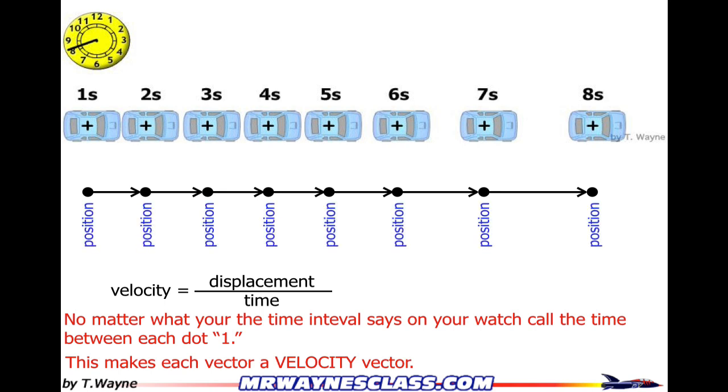First, it contains the position of the car at every interval of time and every tick of time on our clock. It also, the vectors themselves, are velocity vectors. So I can see the velocity.